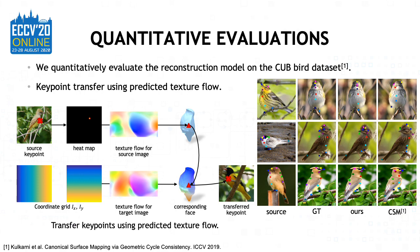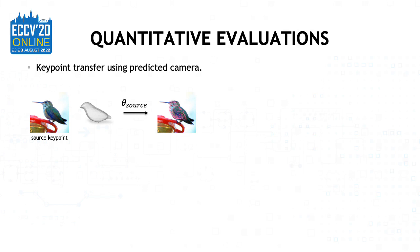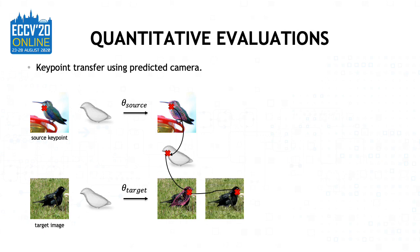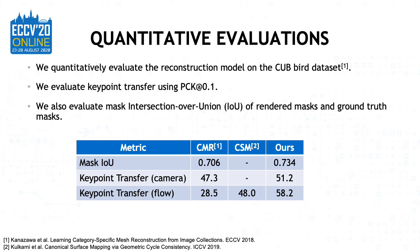Here we show some keypoint transfer results. To evaluate the camera pose using the keypoint transfer task, we first project the vertices of the template using both the predicted camera for the source and target image. For a keypoint in the source image, we map it to a vertex on the template with a projection nearest to the keypoint, and further map it to a pixel in the target image mapped to the same vertex on the template. We also compare the rendered silhouettes with ground truth silhouettes using the intersection over union metric. All quantitative evaluations show that our method performs better than other state-of-the-art methods.